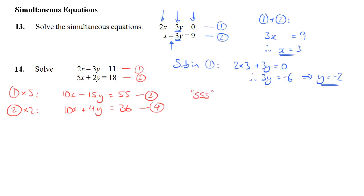You might not do it this way, but some people choose to use sss to represent the same sign subtract. So these have the same sign, so we're going to eliminate them by subtracting one equation from the other. I'm going to subtract equation 3 from equation 4. And that means that I'm doing 4y minus minus 15y, which gives me positive 19y. This is the step that would cause the most problems, so take extra care with that. And of course, 36 minus 55 is minus 19. So now to get y, I just need to divide by 19, so y is equal to minus 1.